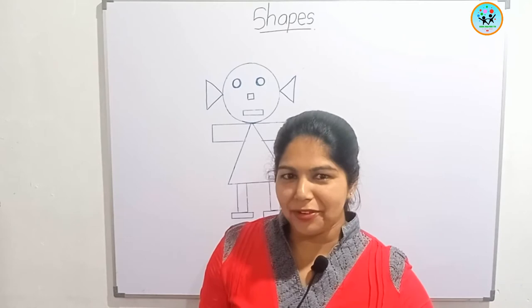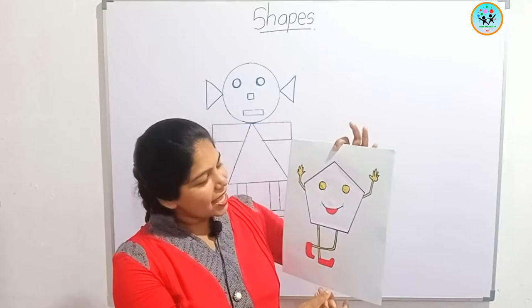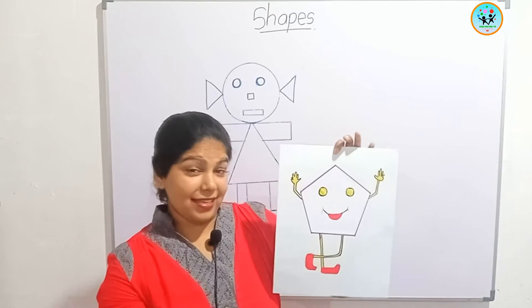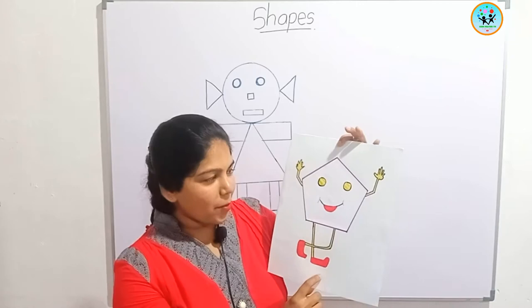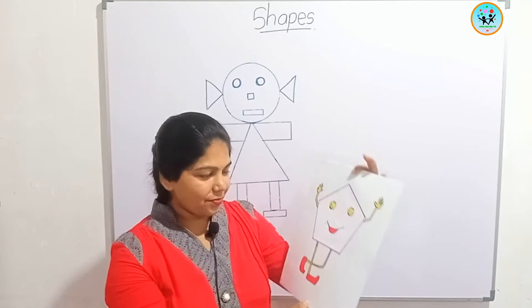Now I am going to show you a cartoon picture. Do you like this? Look at the face of this picture — it's like a pentagon. How many sides are there? One, two, three, four, five. Yes, five sides.